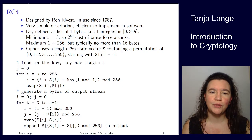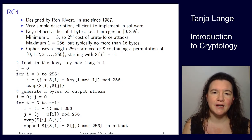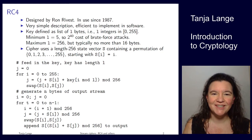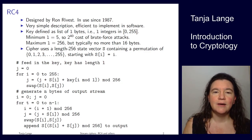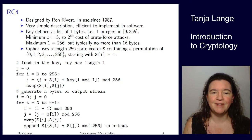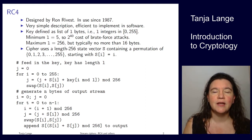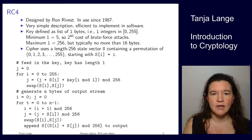This lecture should only be watched once you've done exercise sheet 3, which is about analyzing a stream cipher. On the exercise sheet you won't know what the stream cipher is — I've only given you the definition. But this is actually a historically relevant, and maybe unfortunately still practically relevant, stream cipher: RC4, due to Ron Rivest.